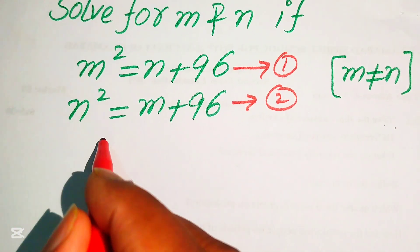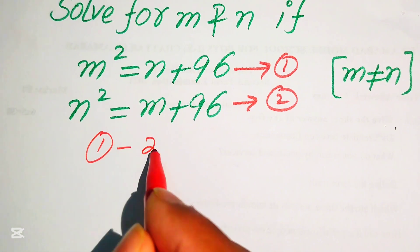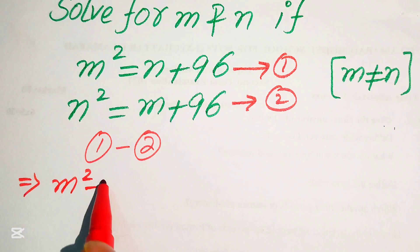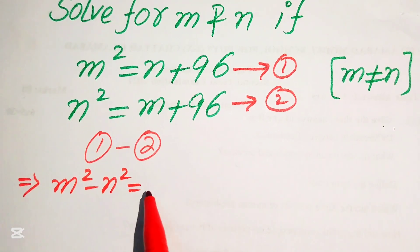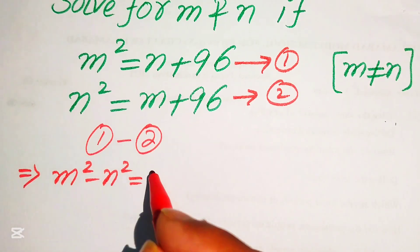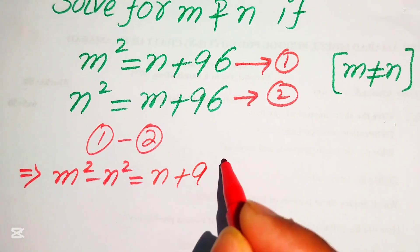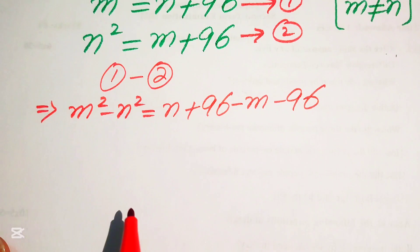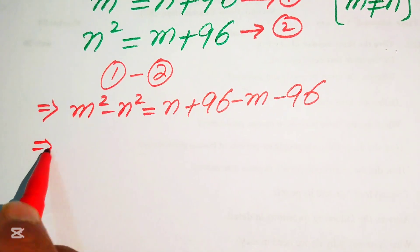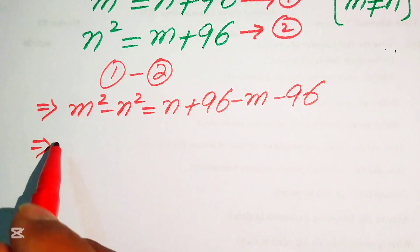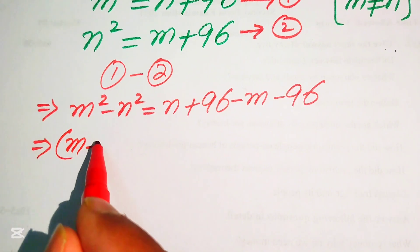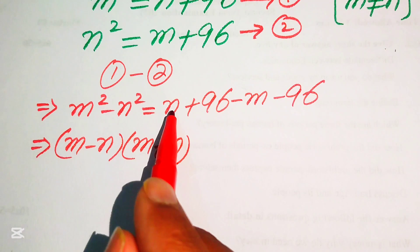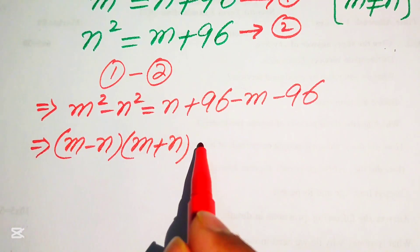In the next step, we subtract equation 1 from equation 2, giving us m² - n² = n + 96 - m - 96. We can apply the difference of squares identity on the left-hand side: m² - n² = (m - n)(m + n).